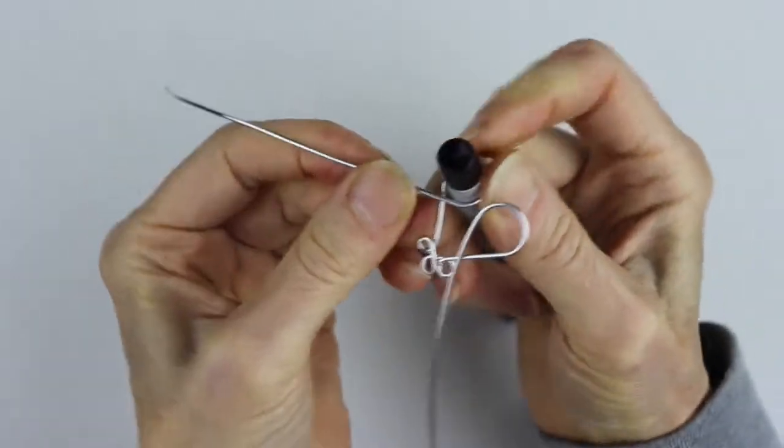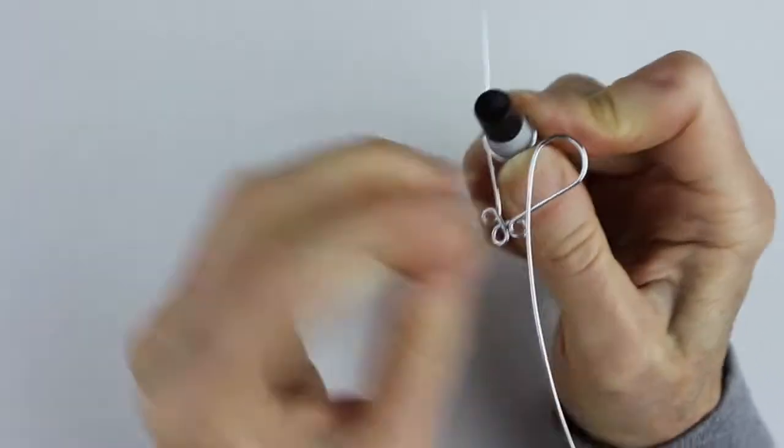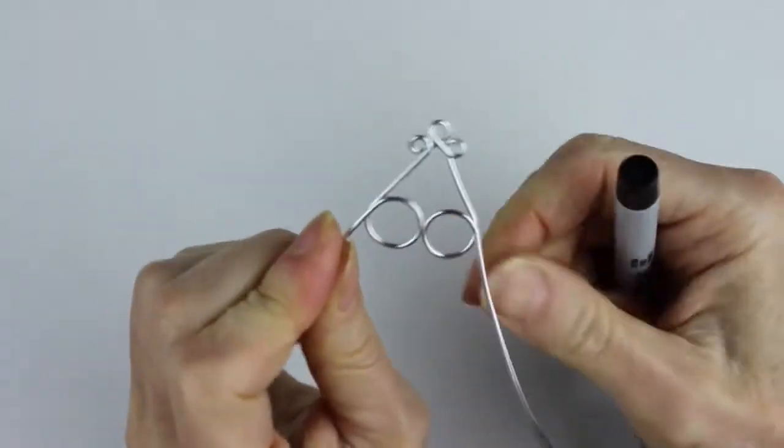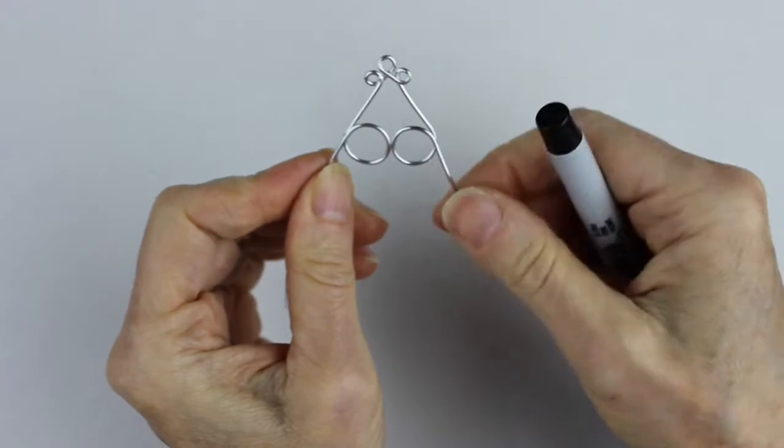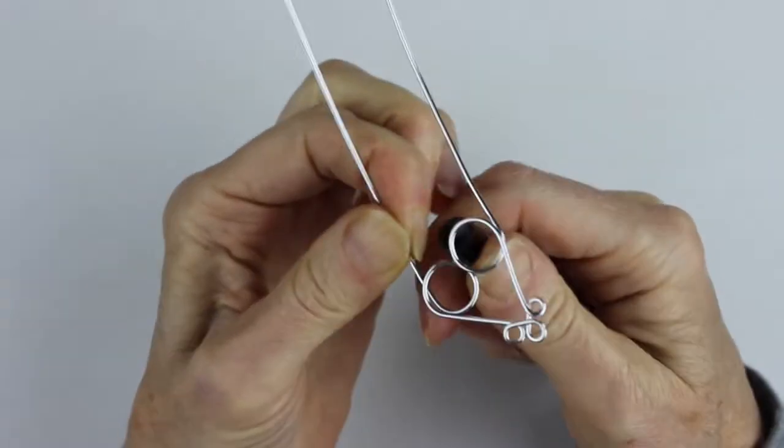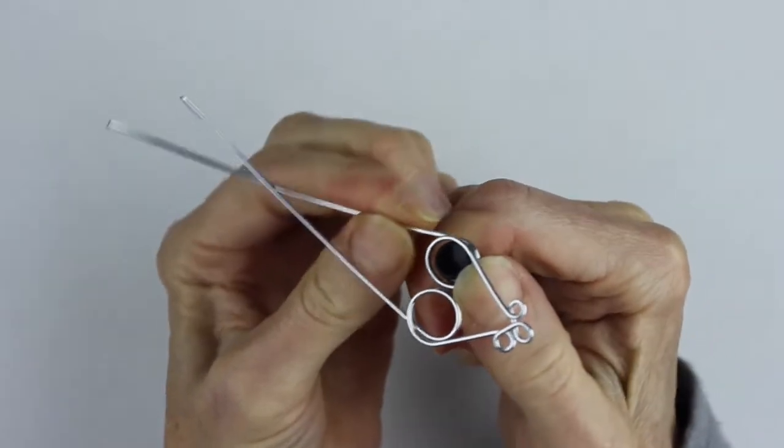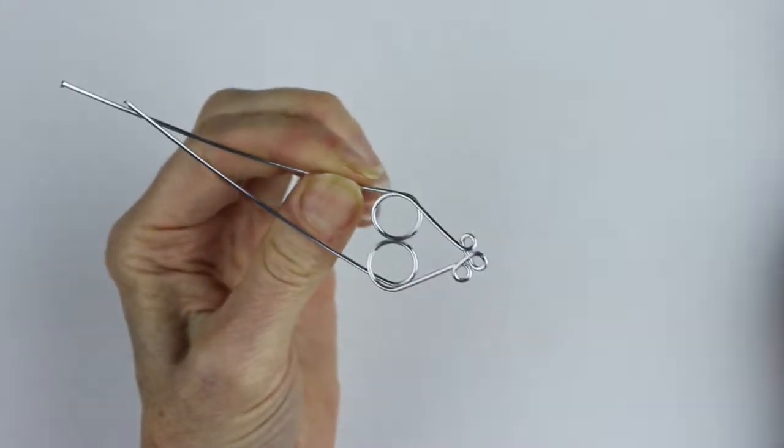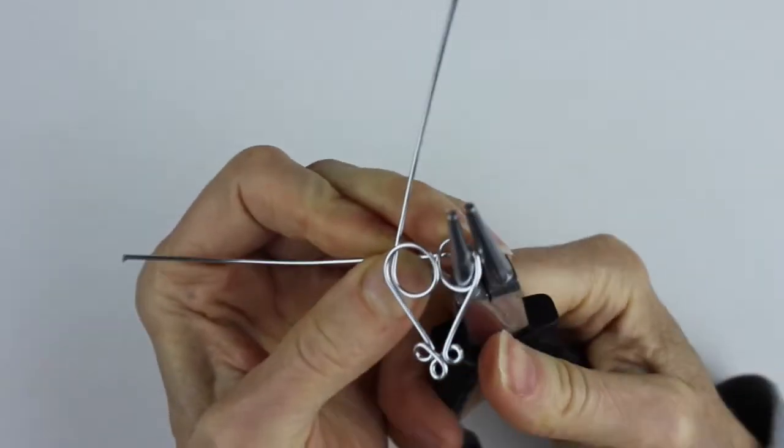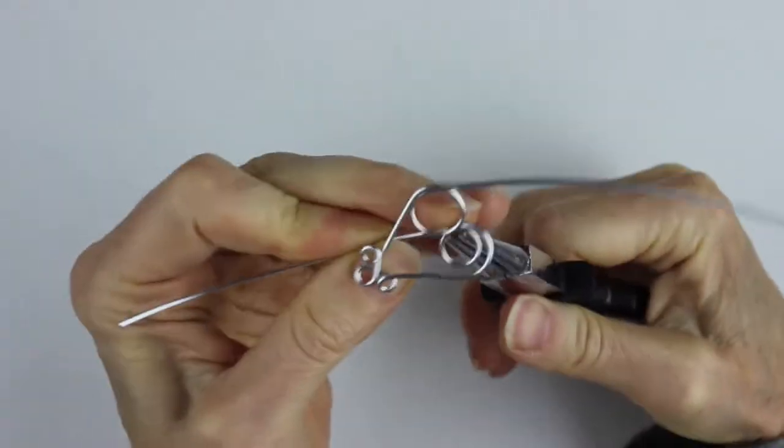Then we want to do a full loop around like that, and on this side a full loop around. At that point you can start making the loop a little bit smaller with the end of the sharpie, and then you get your round pliers and just bring the loop in a little bit more.